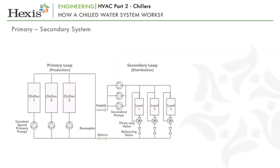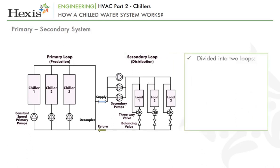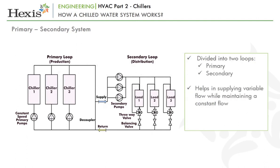In the primary-secondary chilled water system, the chilled water system is divided into two distinct loops: primary and secondary. This arrangement can supply variable flow through the system while maintaining a constant flow through the chillers. The secondary loop contains three-way valves to control the flow of water through the air handlers depending on load. However, the overall quantity of water through the system will remain the same.